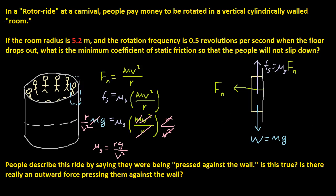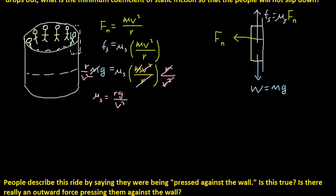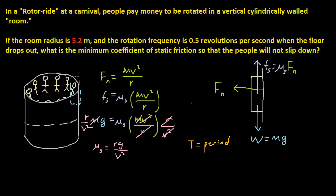What is the velocity? Well, we have our t. T is going to be our period, not period. So that's rotational frequency, 0.5 revolutions per second.